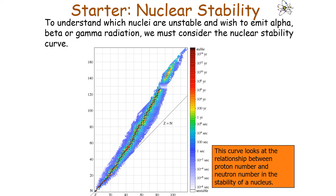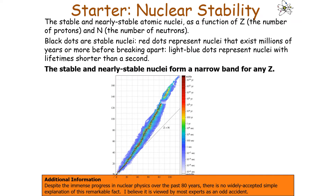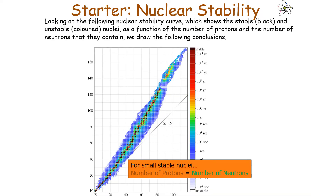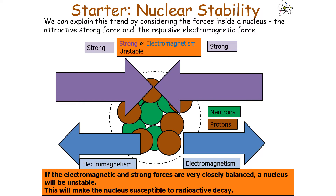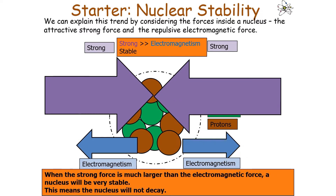The nuclear stability curve looks at the relationship between proton number and neutron number in determining nuclear stability. For small stable nuclei, the number of protons equals the number of neutrons, but for large stable nuclei, neutrons must outnumber protons. This trend can be explained by the forces inside a nucleus — mainly the attractive strong force and the repulsive electromagnetic force. If these two forces are approximately equal, the nucleus is unstable and susceptible to radioactive decay.